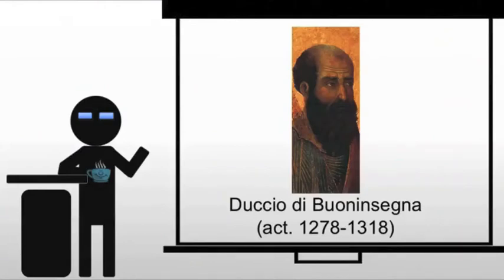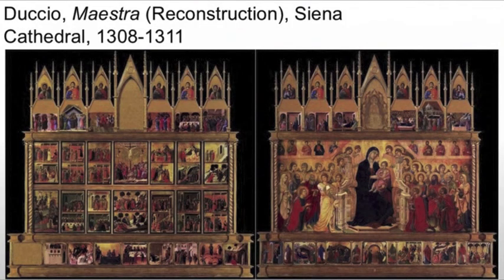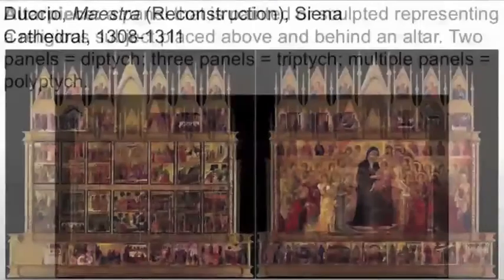Duccio — generally known simply as Duccio — really represents Sienese art at its apogee. He's going to create something called the Maesta, which is this massive altarpiece.